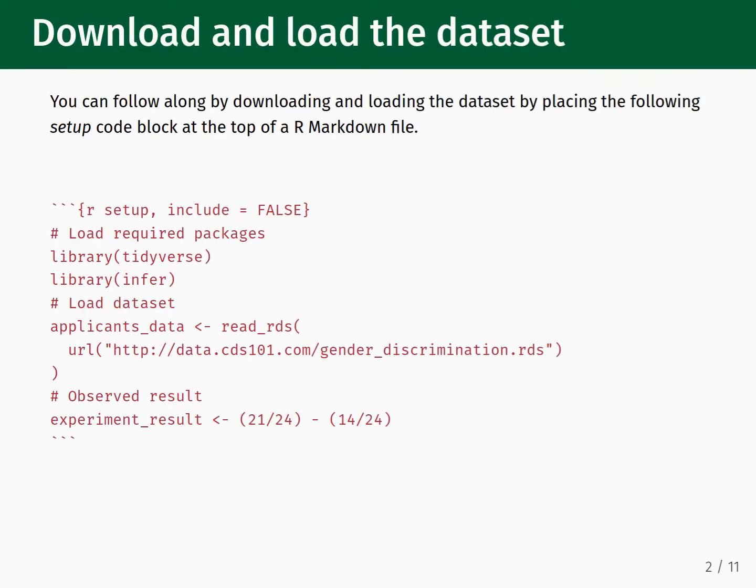If you would like to follow along with the examples shown in this lecture, you can load the dataset directly from the internet by placing the following setup code block at the top of a new R Markdown file. This will load the tidyverse and infer packages, load the gender discrimination dataset directly from data.cds101.com, and store the experimental difference in proportions in the variable experiment_result.